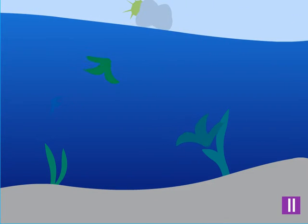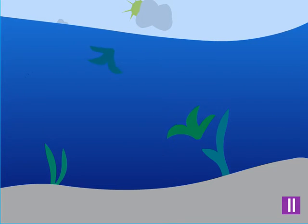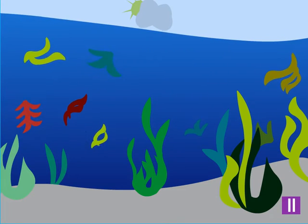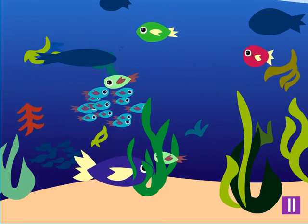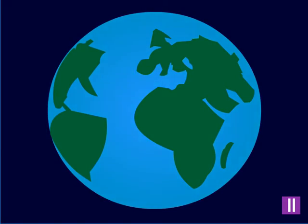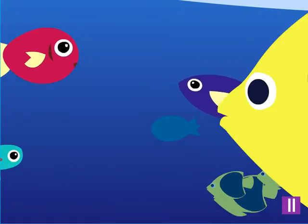Seaweed are plants that live in the ocean. There are many different kinds of seaweed. They are the food for many ocean animals, like fish. Fish live in all the oceans. There are thousands of different kinds of fish.